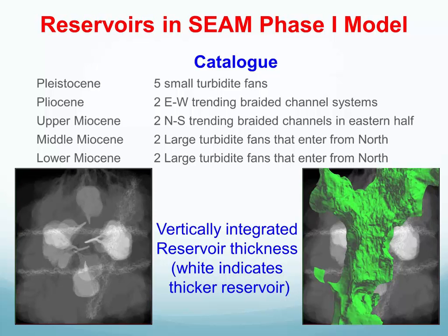We put several reservoirs in the SEAM Phase I model at different depths and in different units. There's a mix of reservoirs from turbidites to stream channels, with channels going in different directions. The lower left-hand plot is like an X-ray through the model showing the thickness of the reservoirs — the whitest areas have the greatest reservoir thickness, while black areas have no reservoirs. You can clearly see east-west trending stream channels, a north-south trending stream channel, and some turbidites.